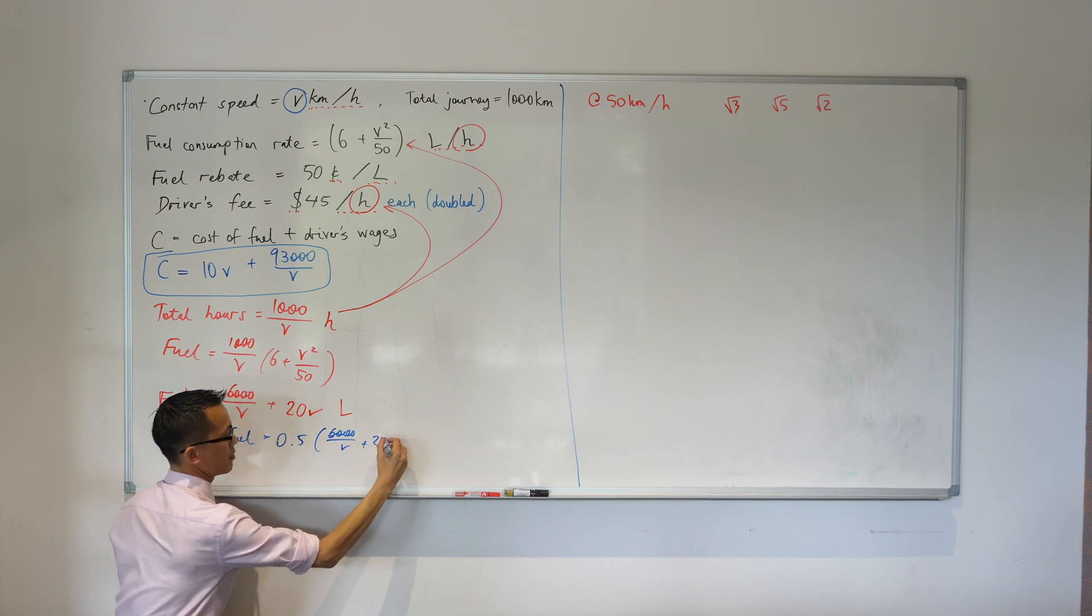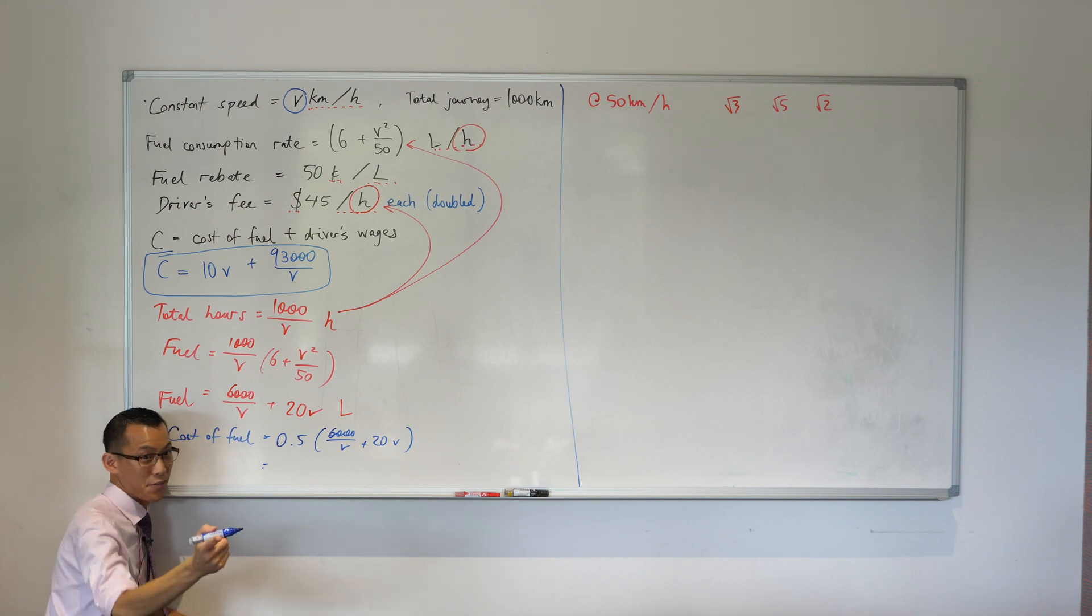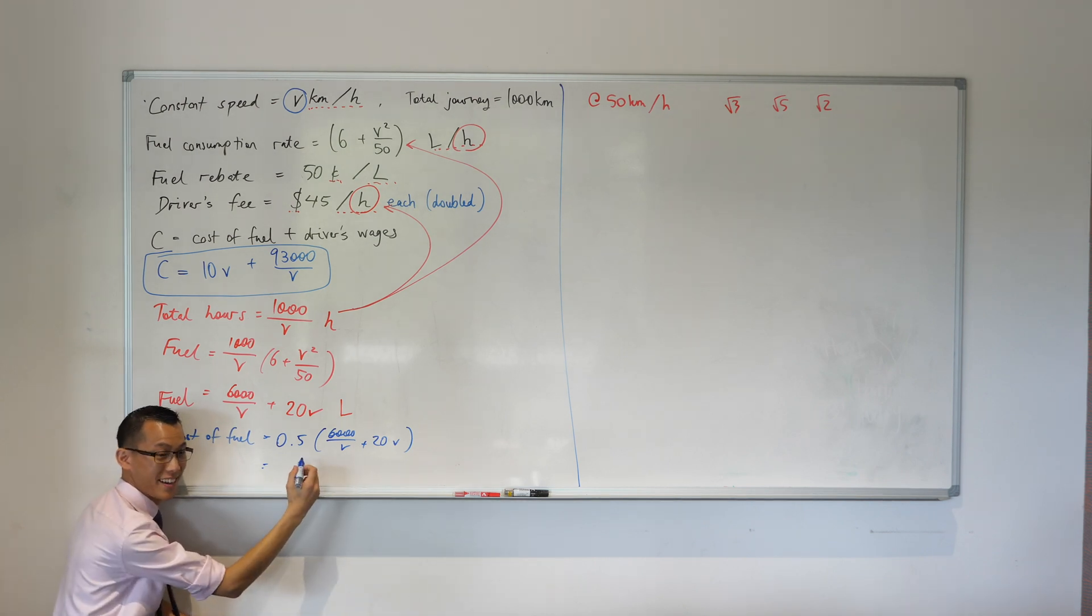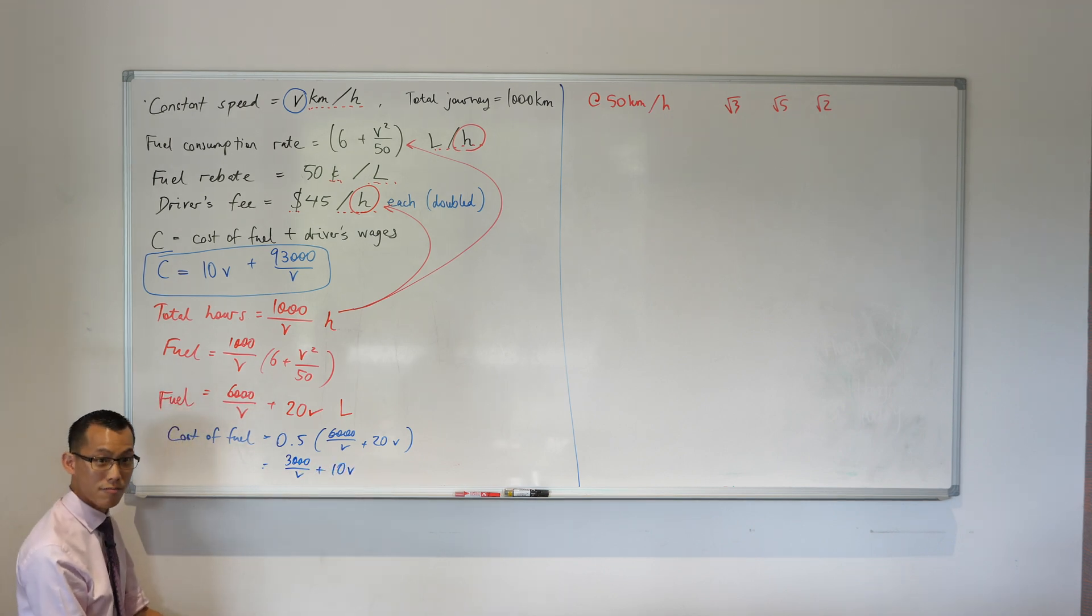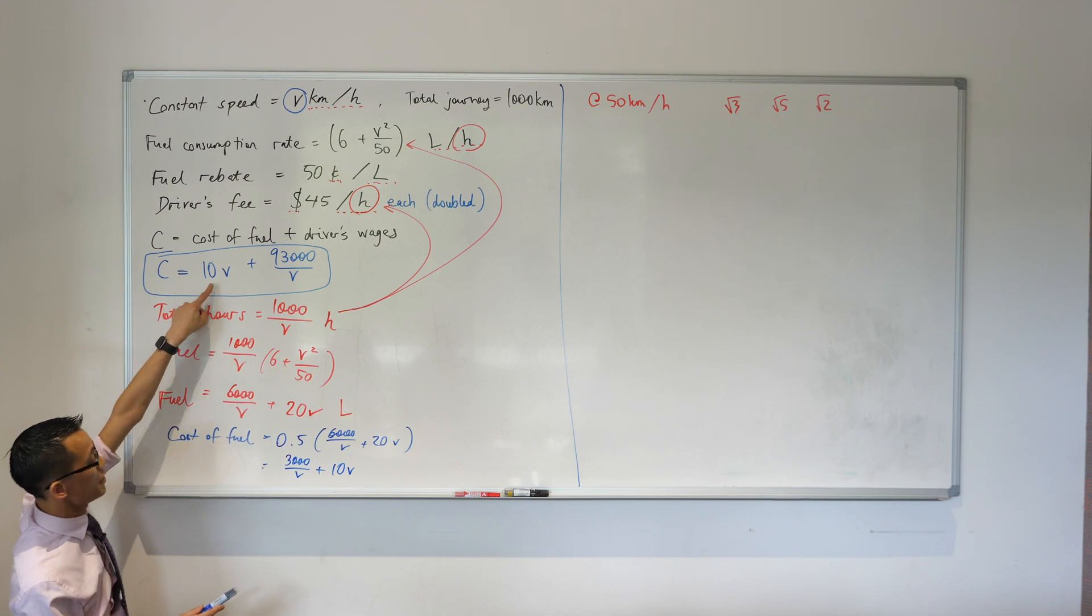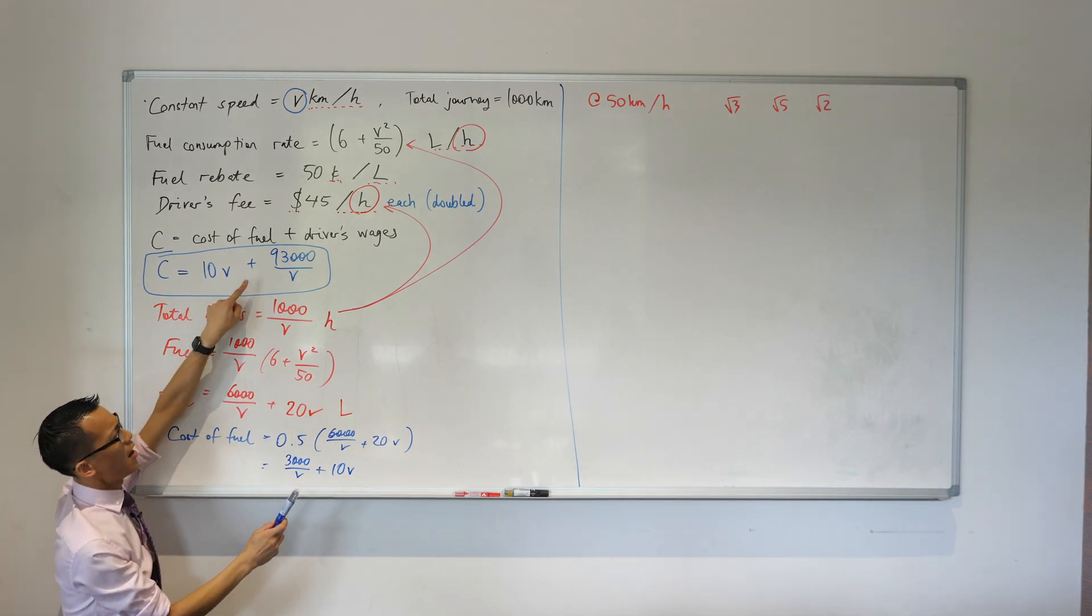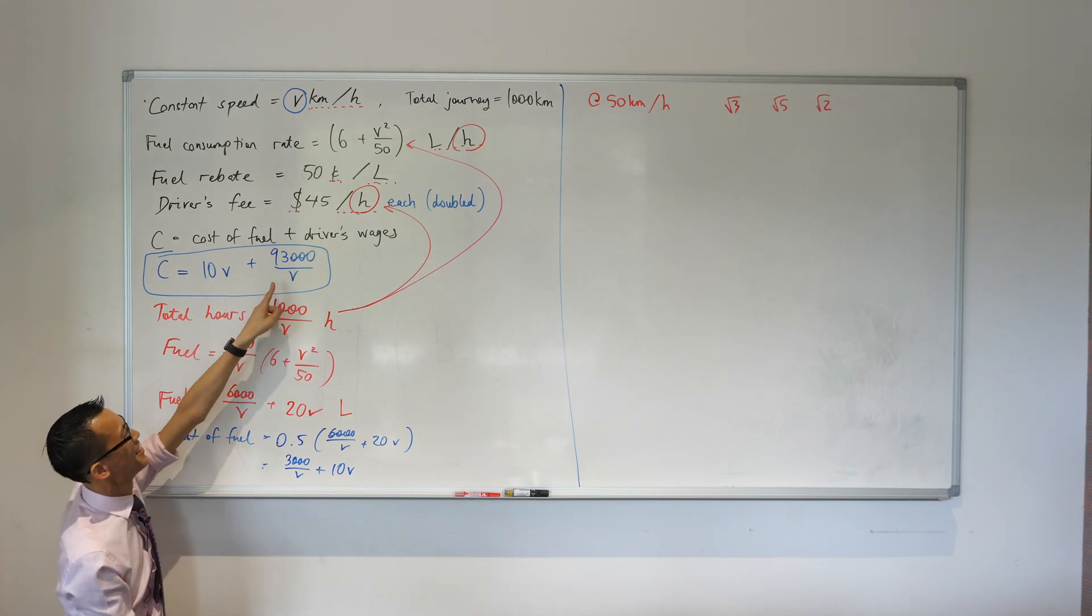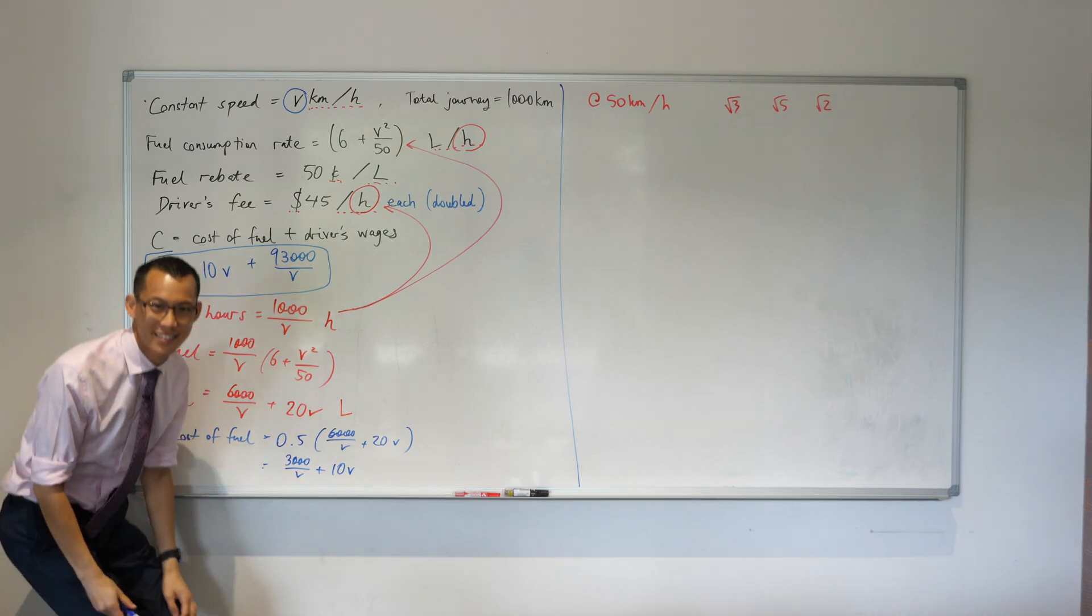Okay, what do I get? You've already got this. Tell us what we got. Fantastic. Okay, now again, as I mentioned before, you always keep an eye on this. You're like, 10v, that's good. 3000 on v, I've got part of it, but I'm missing a big chunk, right?